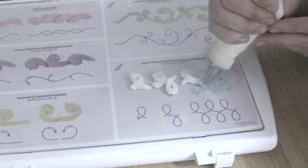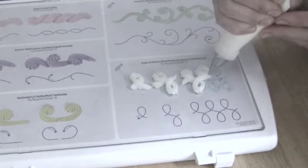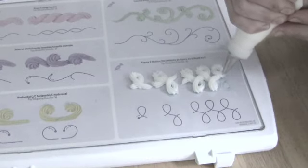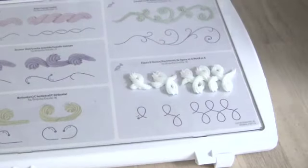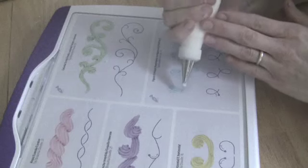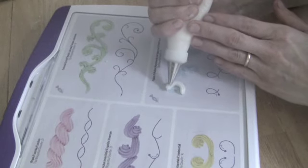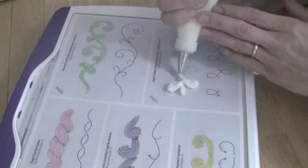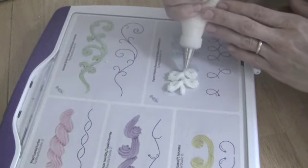It's also important to remember that you want to have the tip above the surface. You don't want it to be dragging along the surface of your practice board or of your cake if you're piping this directly onto your cake. Remember you want to have the tip slightly above the surface, and then you're kind of going to let the icing fall where you want it.